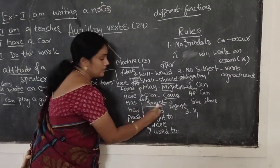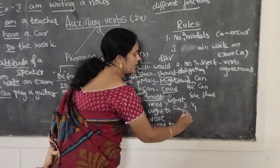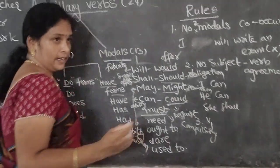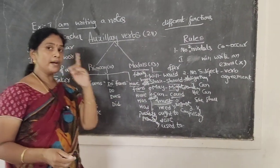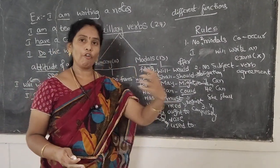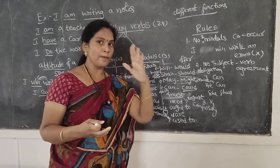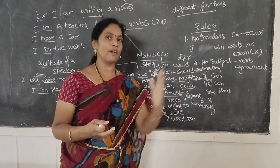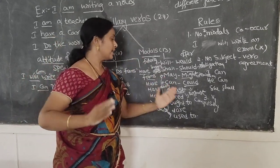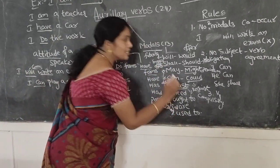Must is used for compulsion. When I put a class on Sunday for you, I will say: you must come. Or when you are on the road, the policeman will say: you must follow the traffic rules. That means we have to do that — it is compulsory.